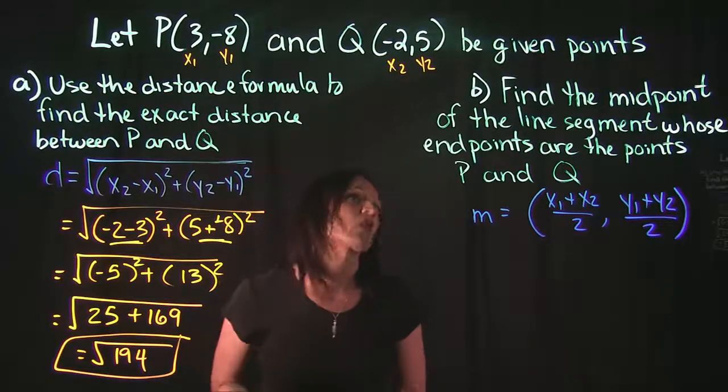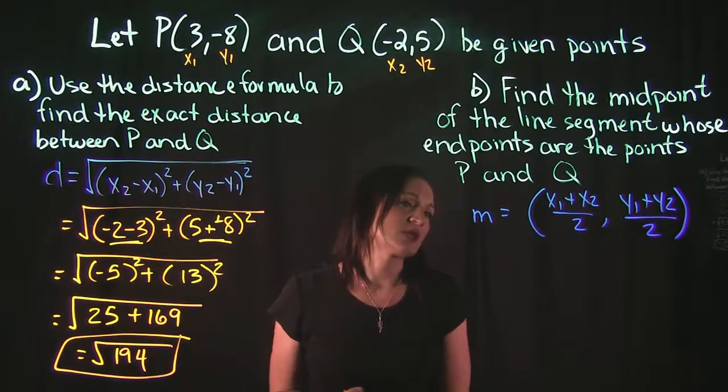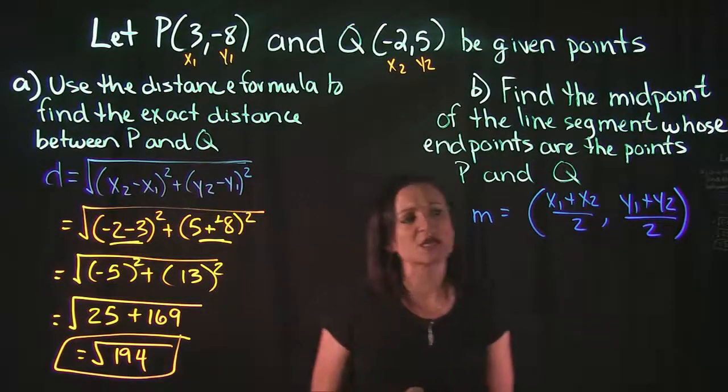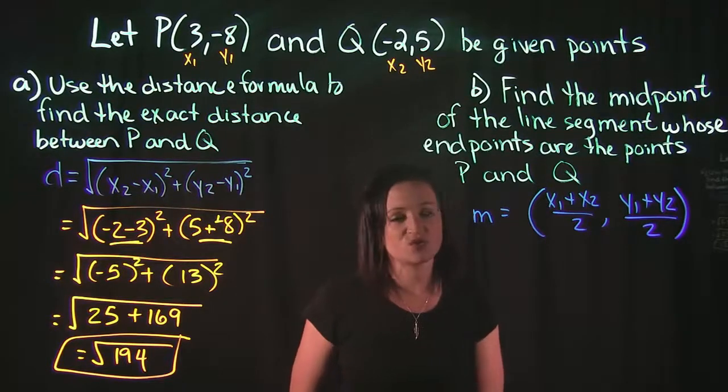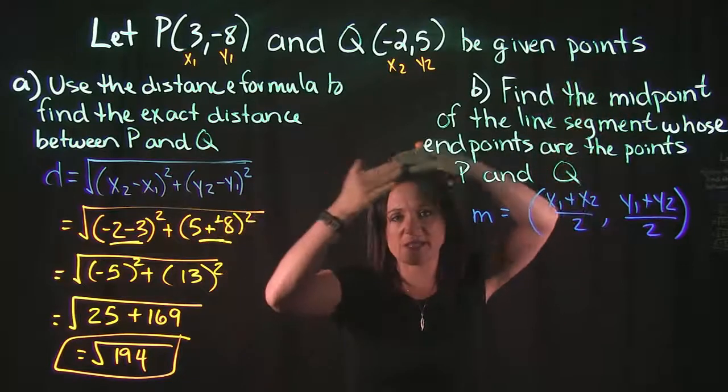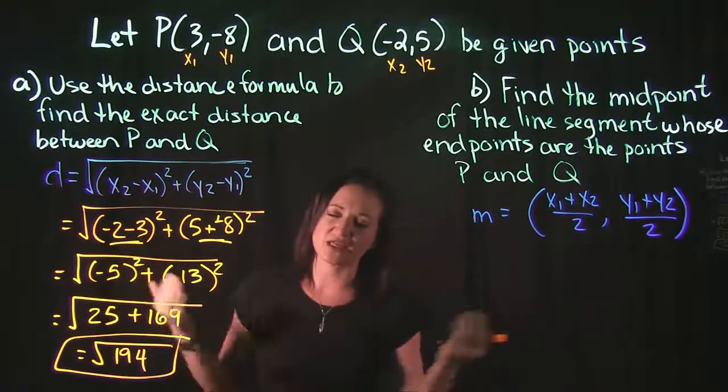Over to B, this is going to be our midpoint formula here. So our midpoint is (x1 + x2)/2, (y1 + y2)/2. You take your two x values, divide them in half, take your two y values, divide them in half, and that's going to give you exactly in the middle of that line segment.